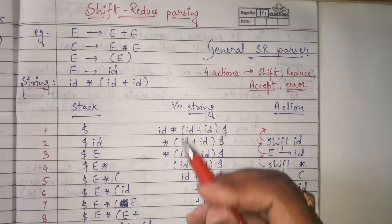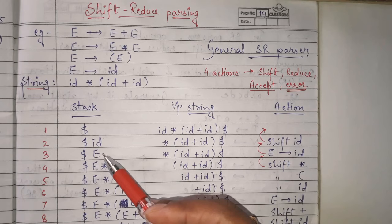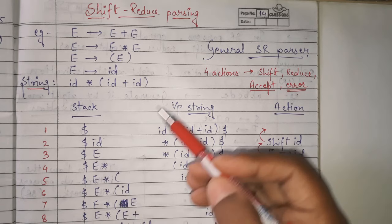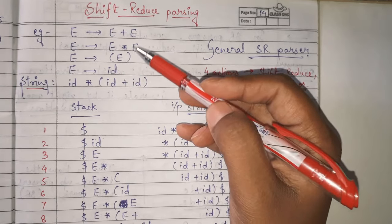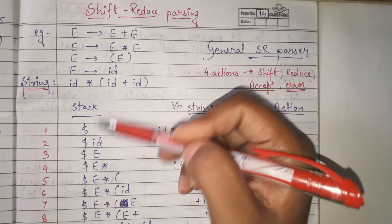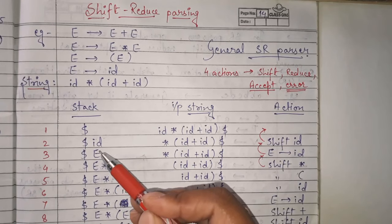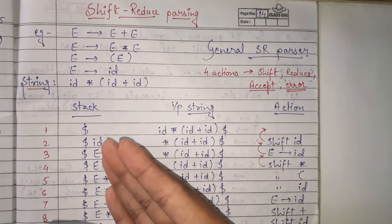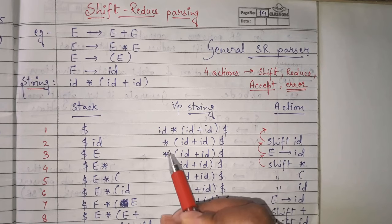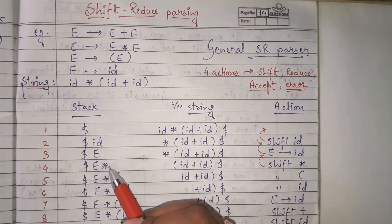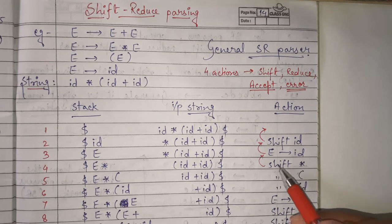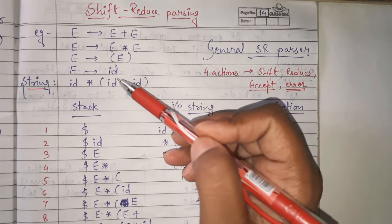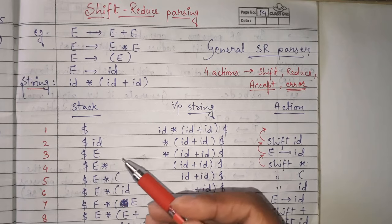In the next step, in place of ID we write E — that is known as reduction. The stack now has dollar E and the input string remains as it is. Now we check: is capital E alone present as any production's RHS? No, only E alone is not present. So we cannot reduce; we have to shift. So we shift star into the stack, getting dollar E star, and the action is shift star. We check E star — not present in RHS — so again we shift, getting shift opening bracket.